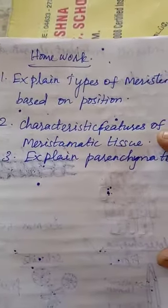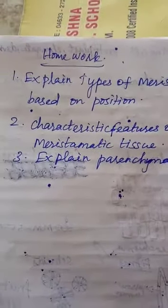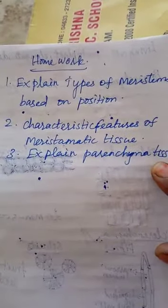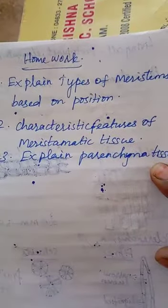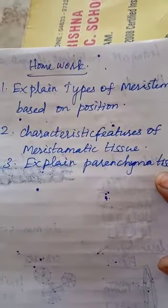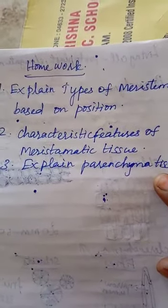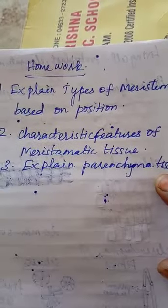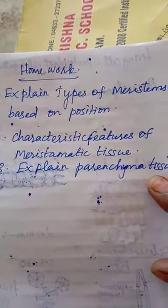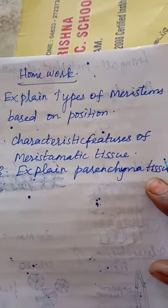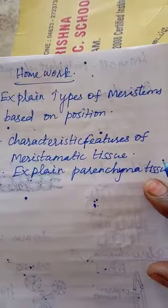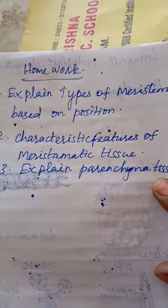Students, today's homework: first question, explain types of meristems based on position. You have to write the apical meristem, intercalary meristem, and lateral meristem. On the basis of their position in the plant, meristems are classified into three types: apical, intercalary, and lateral.